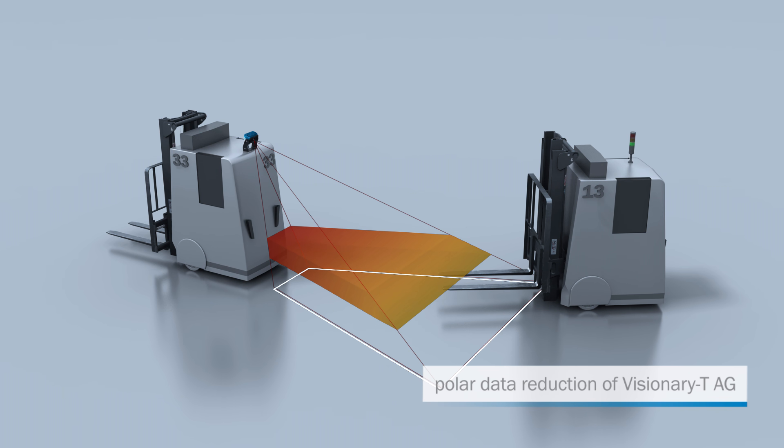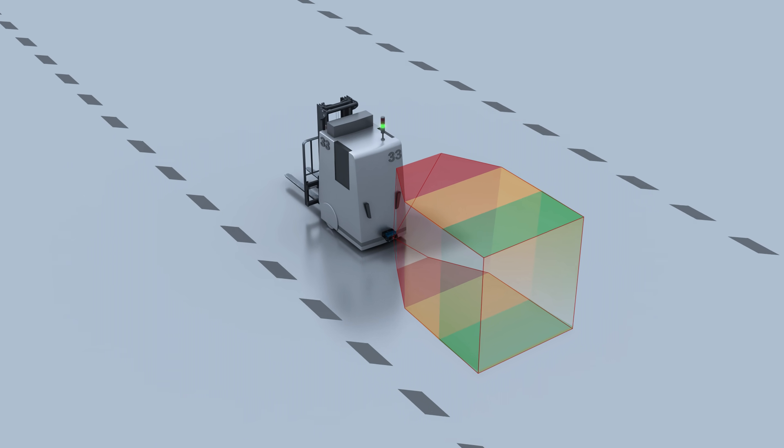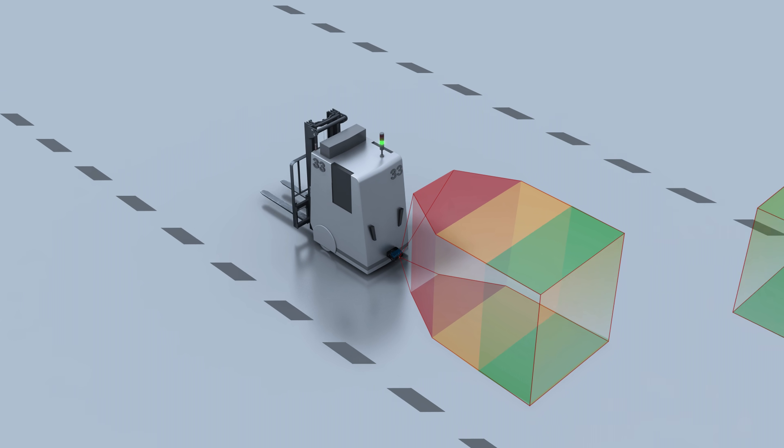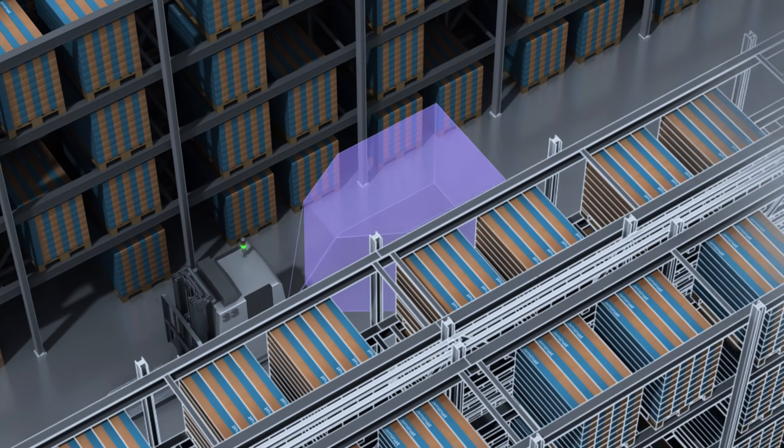The polar data reduction, for example, reduces the complete 3D information to just a single line. Visionary T can solve various applications. Collision warning for industrial vehicles like AGVs is one example.